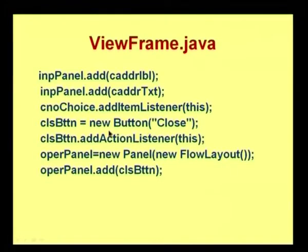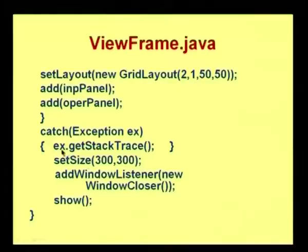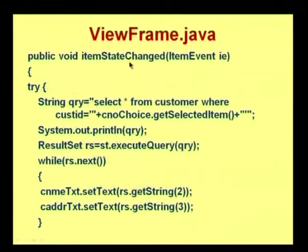We have a close button, and whenever I choose my item in the choice box the item listener is activated. I add the operation panel with FlowLayout containing only the close button. Setting the layout to GridLayout — the same process as AddFrame. The only difference is that instead of a text field for customer number, here we have a choice. I add the window listener with a new WindowCloser, and on closing the ViewFrame, the CMS frame will get displayed.